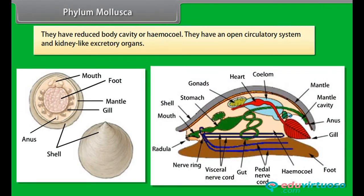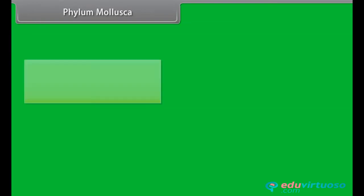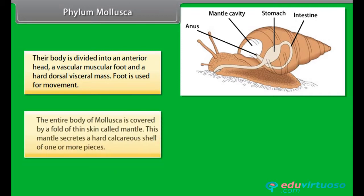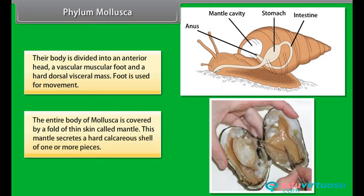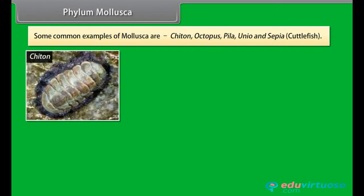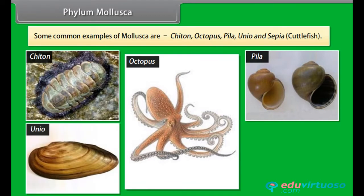They have an open circulatory system and kidney-like excretory organs. Their body is divided into an anterior head, a vascular muscular foot, and a hard dorsal visceral mass. Foot is used for movement. The entire body of Mollusca is covered by a fold of thin skin called mantle. This mantle secretes a hard calcareous shell of one or more pieces. Some common examples of Mollusca are Chiton, Octopus, Pila, Unio, and Sepia, cuttlefish.